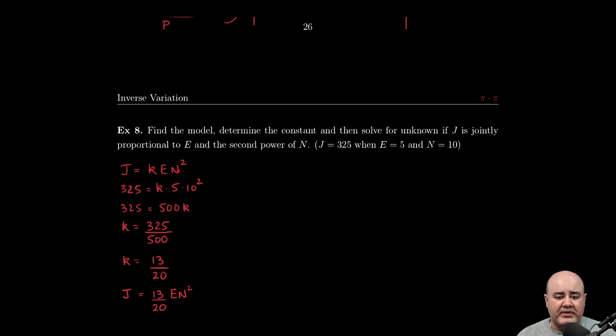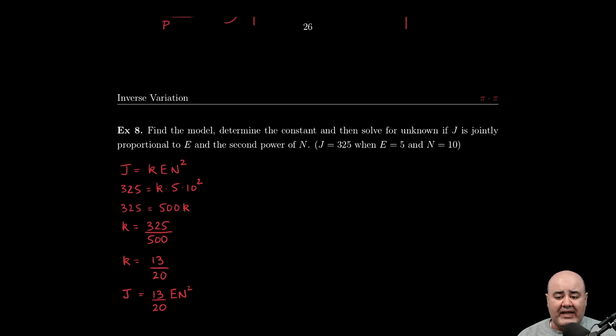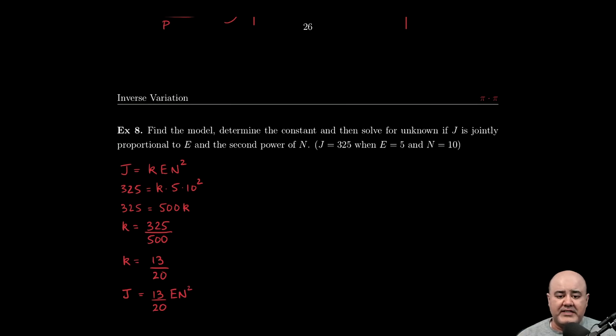So here you'll notice that when I wrote the equation, I didn't write a for the constant of variation. I wrote k. There is no monopoly for the letter a to be the constant of variation. It could be k, it could be p, q, r, it could be any letter as long as it's not already being used in the problem.